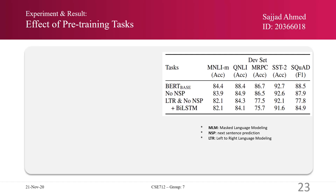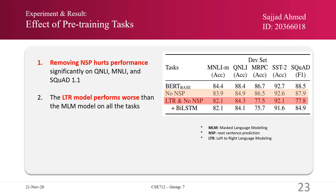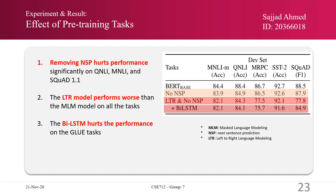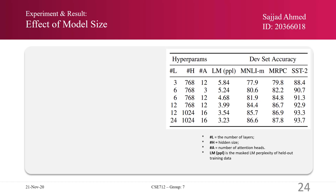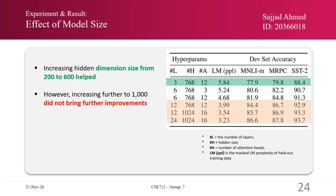The authors then discussed the effect of pre-training tasks. They observed that removing the Next Sentence Prediction task hurts performance significantly on different metrics. The left-to-right model performs worse than the masked language modeling model on all tasks. A BiLSTM also hurts performance on GLUE tasks. Regarding model size, increasing the hidden dimension size from 200 to 600 helps performance; however, increasing further to 1000 did not bring further improvement.